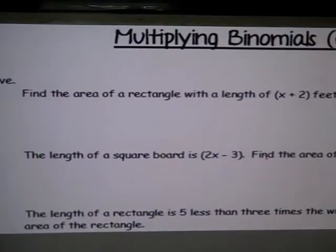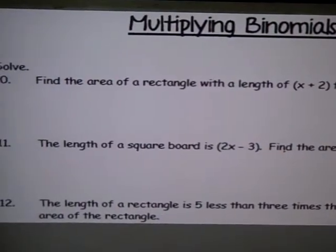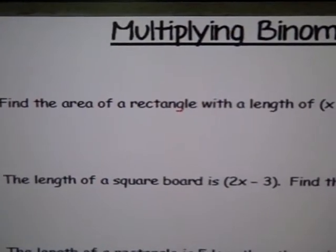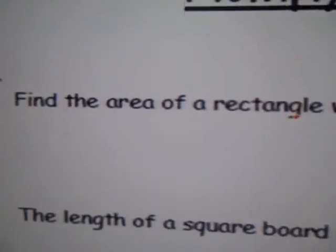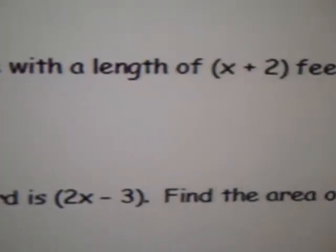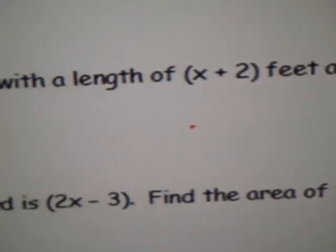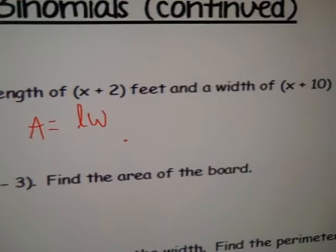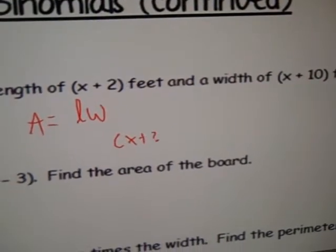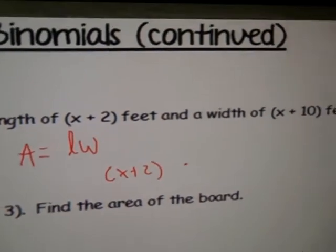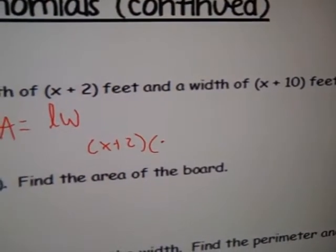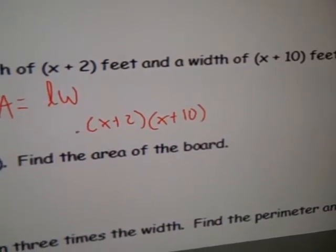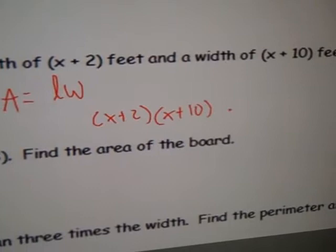More practice problems with multiplying binomials. For these, I'm just going to show you the setup. And you can use your knowledge of multiplying binomials. Either FOIL or box method. To find the answer. First one is area of a rectangle. Length and width given. Just write L times W. That is the area. You know L is x plus 2. We can substitute x plus 2 in place of L. And we know W is x plus 10. We can substitute W. And just multiply those. FOIL it. Or use the box method. And you should get your answer.